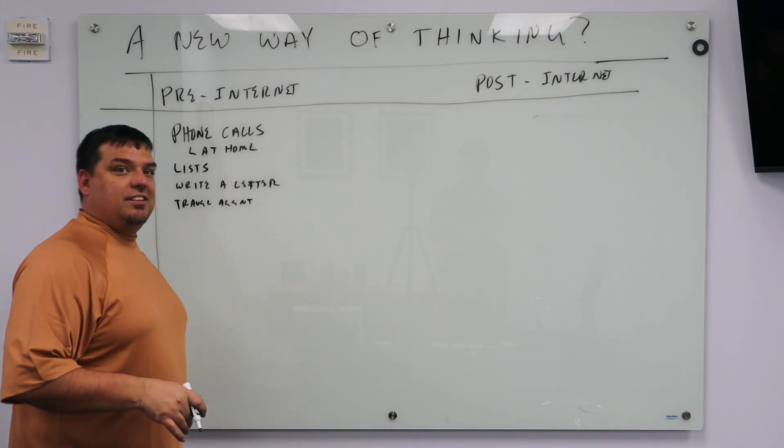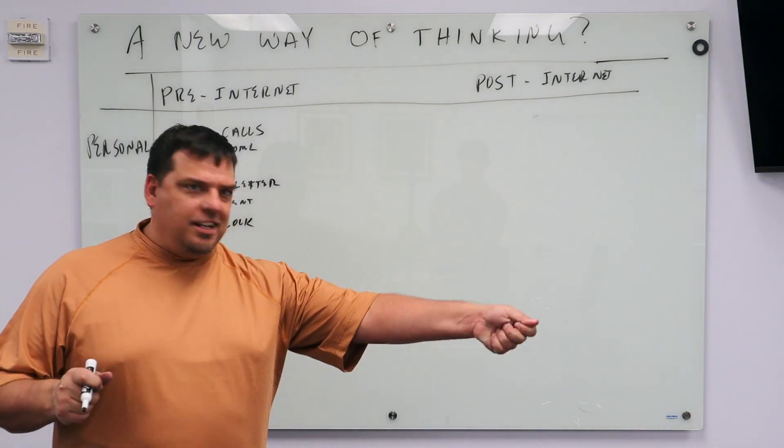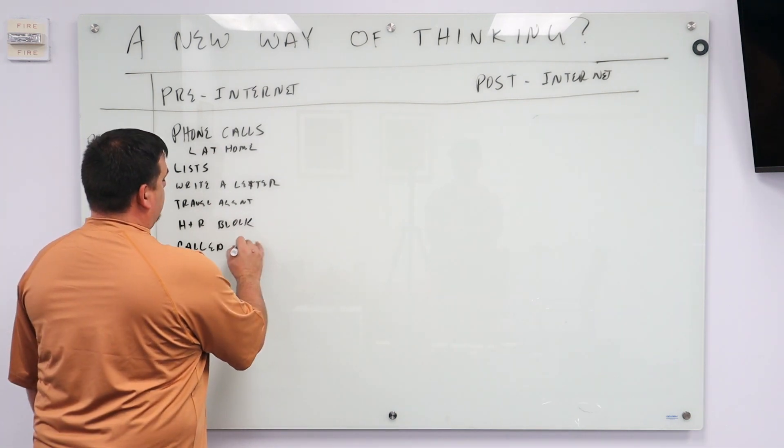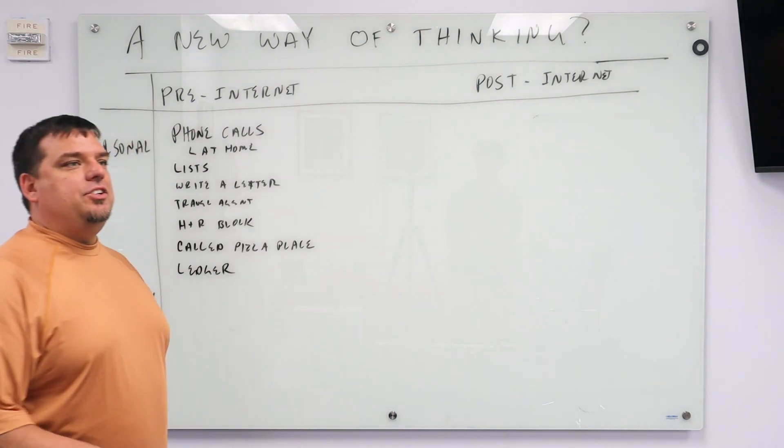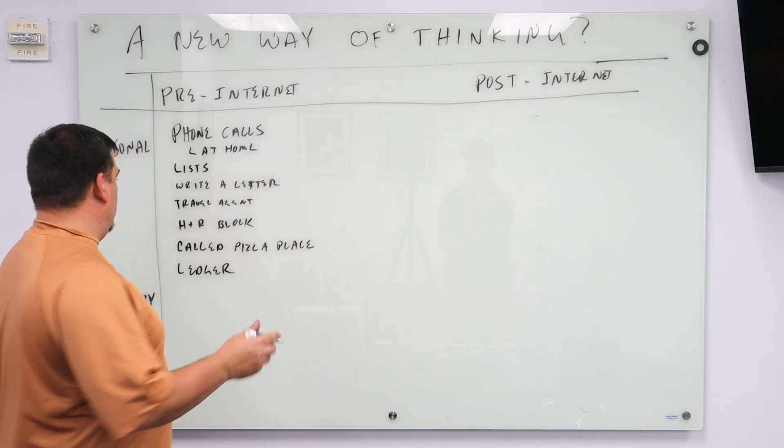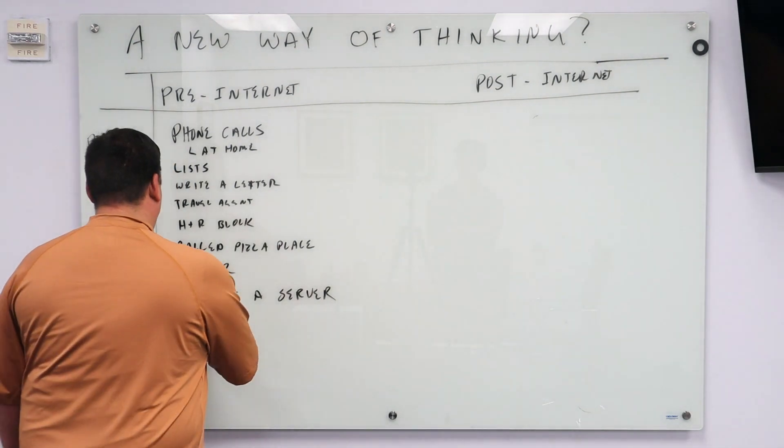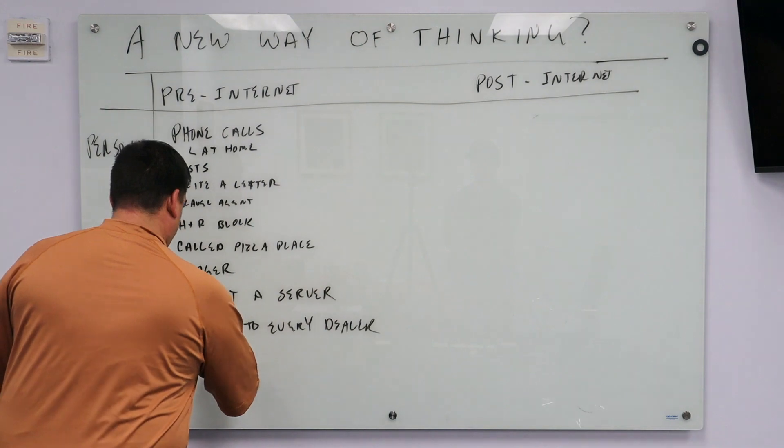How did you do your taxes? You went to H&R Block. You took all of your W-2s and you went to H&R Block. How did you order pizza? You called the pizza place. How did you do your accounting? You did it on a ledger. How did you add a new server? You bought one. How did you research cars? You drove to every dealer. How did you entertain yourselves on the weekend? Went to the video store.